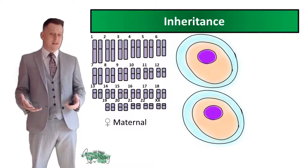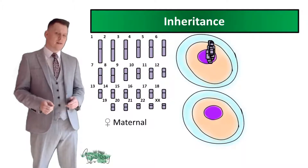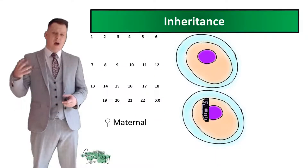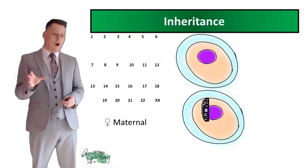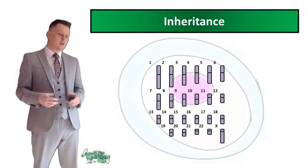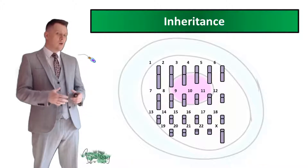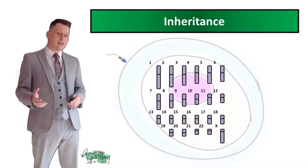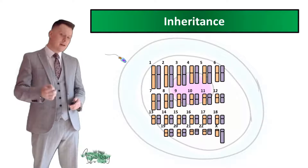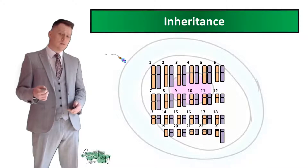The same thing happens in the egg cell: one chromosome from each pair goes into one egg cell and the other half into another egg cell. So our sperm cell and our egg cell each contain half the amount of genetic material as a normal human body cell — 23 chromosomes each. Upon fertilization, the sperm delivers another 23 chromosomes, giving us 46 chromosomes or 23 pairs, the same as a normal human body cell.